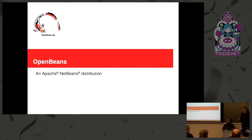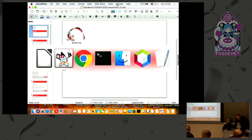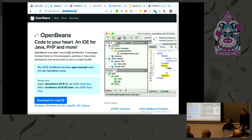This is connected to the NetBeans ecosystem. One of the most interesting developments outside of Apache NetBeans is OpenBeans. There's a web page you can go to — openbeans.org. What that is, is a NetBeans distribution. The way you can think about it is: in the way that there is Ubuntu and Debian, there is OpenBeans and Apache NetBeans. Potentially anyone could take Apache NetBeans as their starting point and create their own distribution.